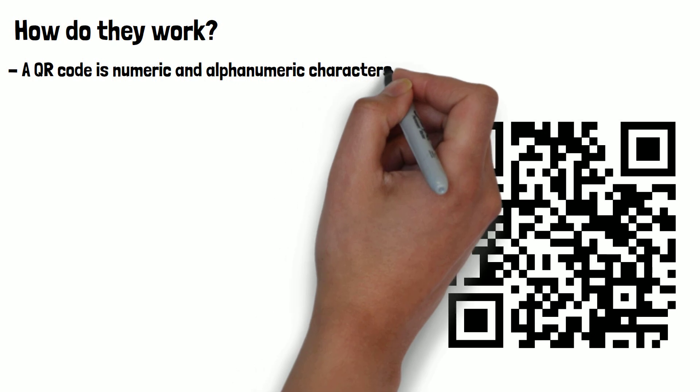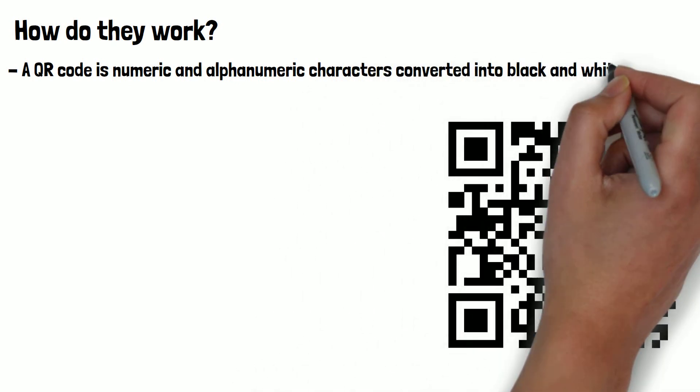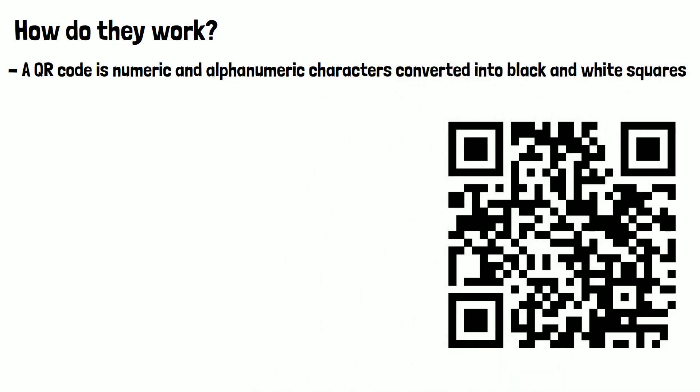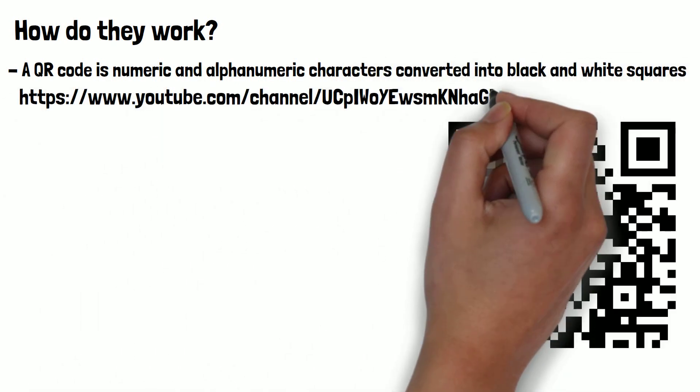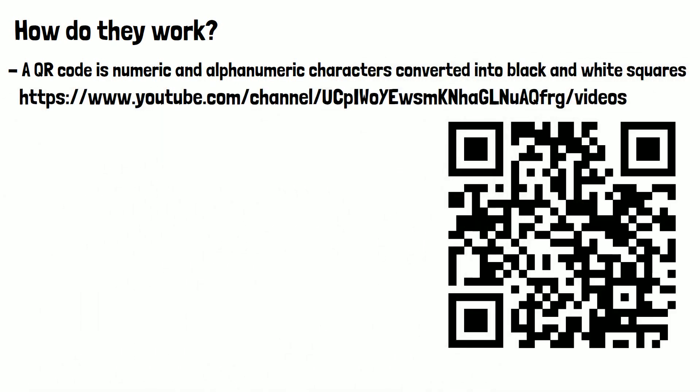A QR code is numeric and alphanumeric characters converted into digital squares. The QR code below contains the URL for this channel's video page. If you scan it with another device, you'll be taken there. This URL has been converted from alphanumeric characters into black and white squares.